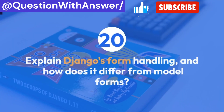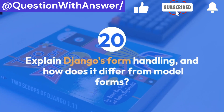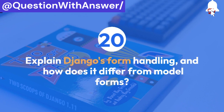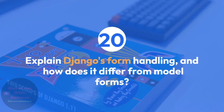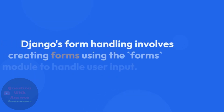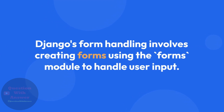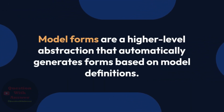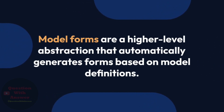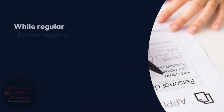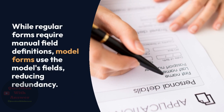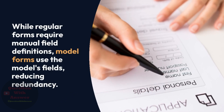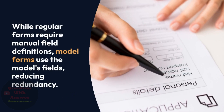Question 20: Explain Django's form handling, and how does it differ from model forms? Answer: Django's form handling involves creating forms using the forms module to handle user input. Model forms are a higher-level abstraction that automatically generates forms based on model definitions. While regular forms require manual field definitions, model forms use the model's fields, reducing redundancy.